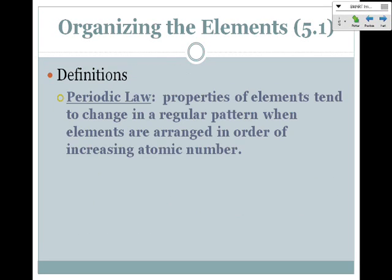Just a few definitions we need to make sure that we are familiar with. Periodic law means that the properties of elements are going to change in a regular pattern over the periodic table. They're arranged in the order of increasing atomic number, and then we're going to look at some properties of elements and their trends in just a moment.